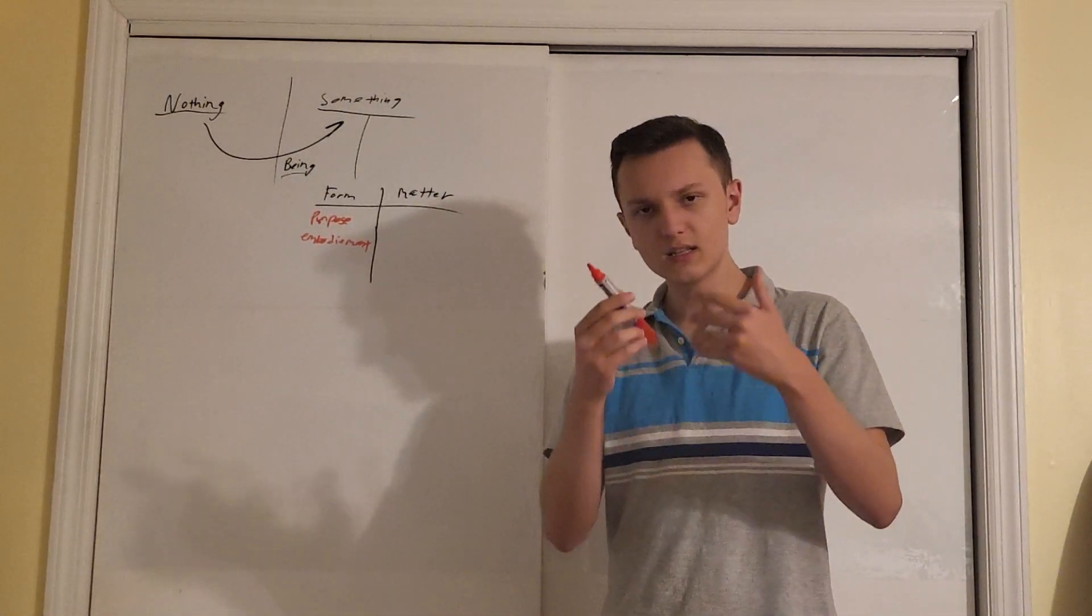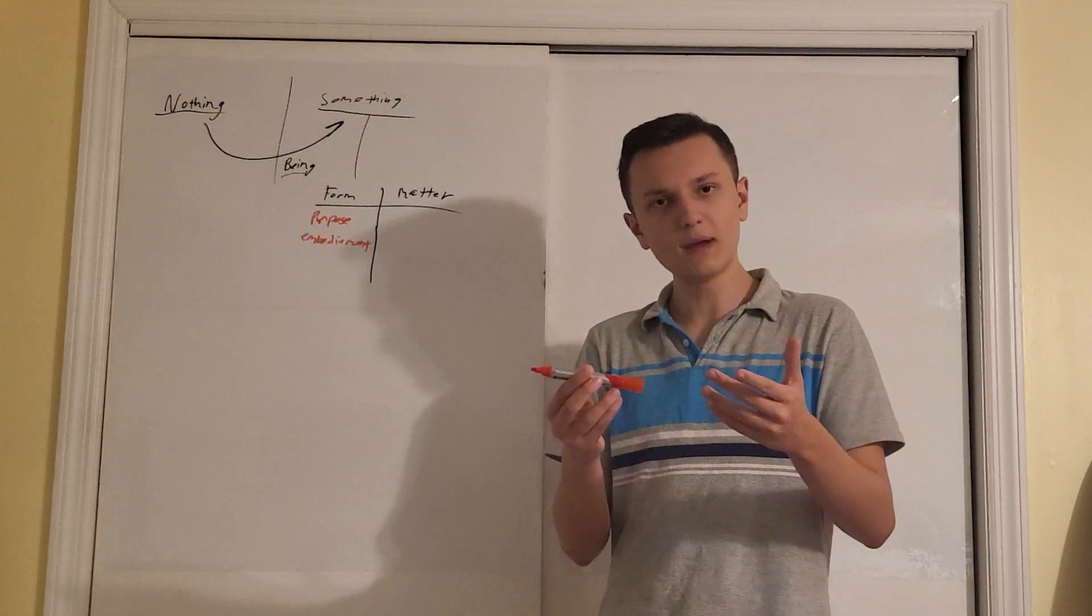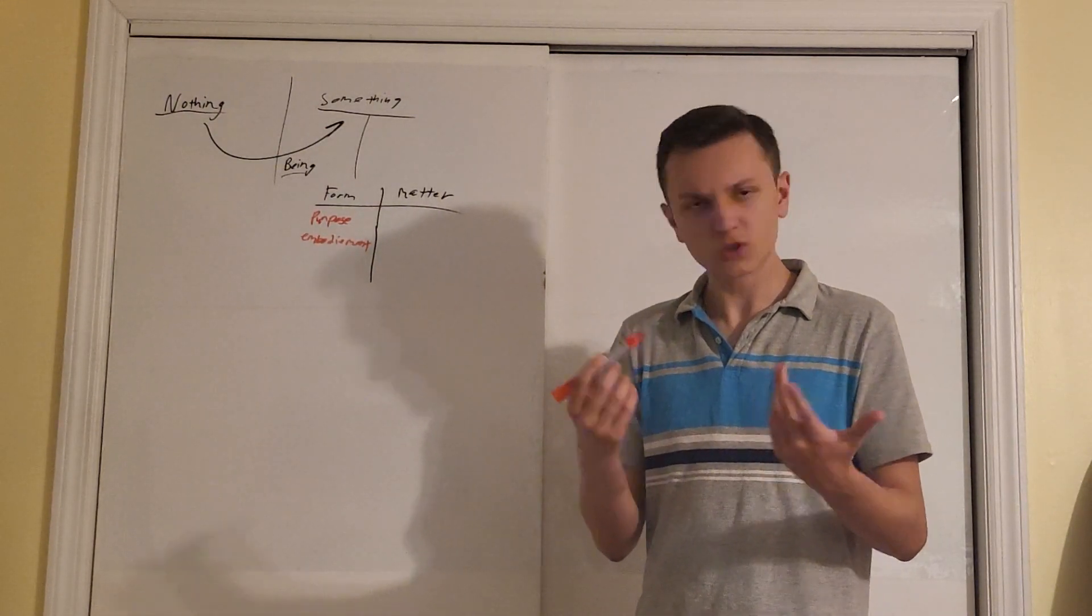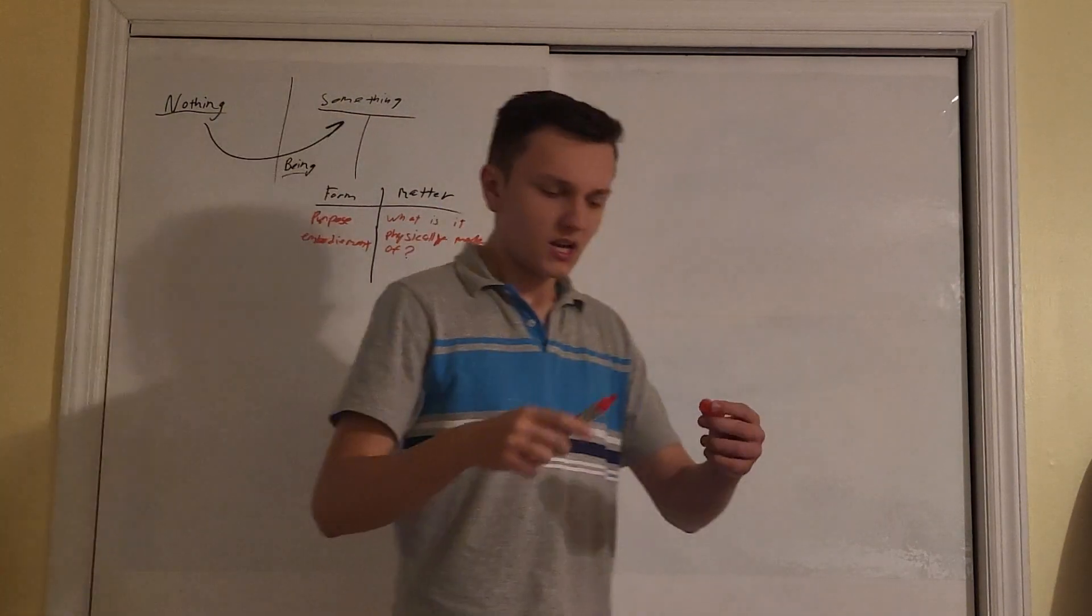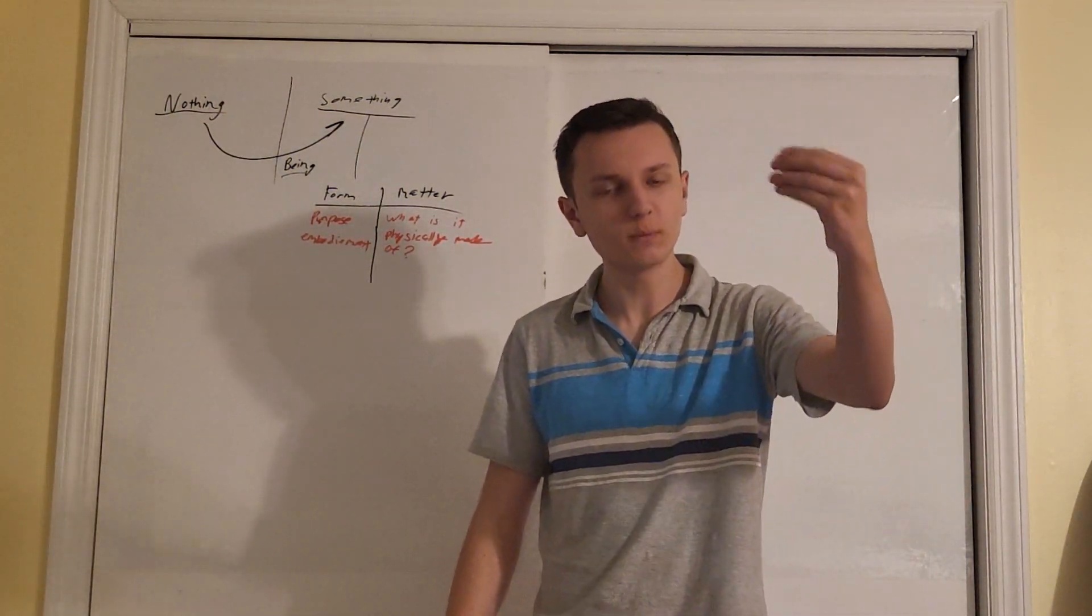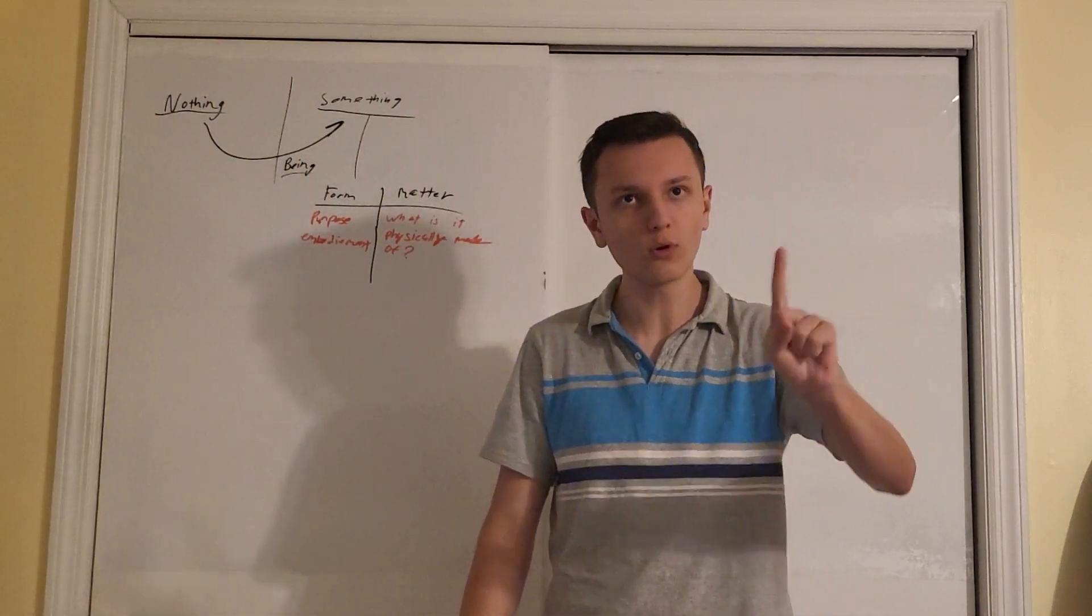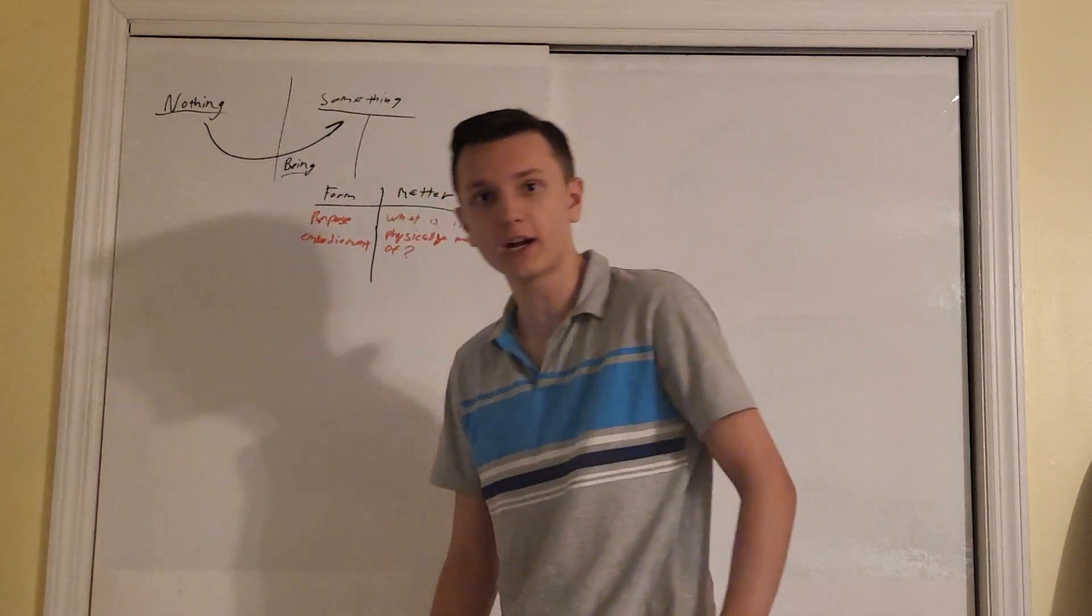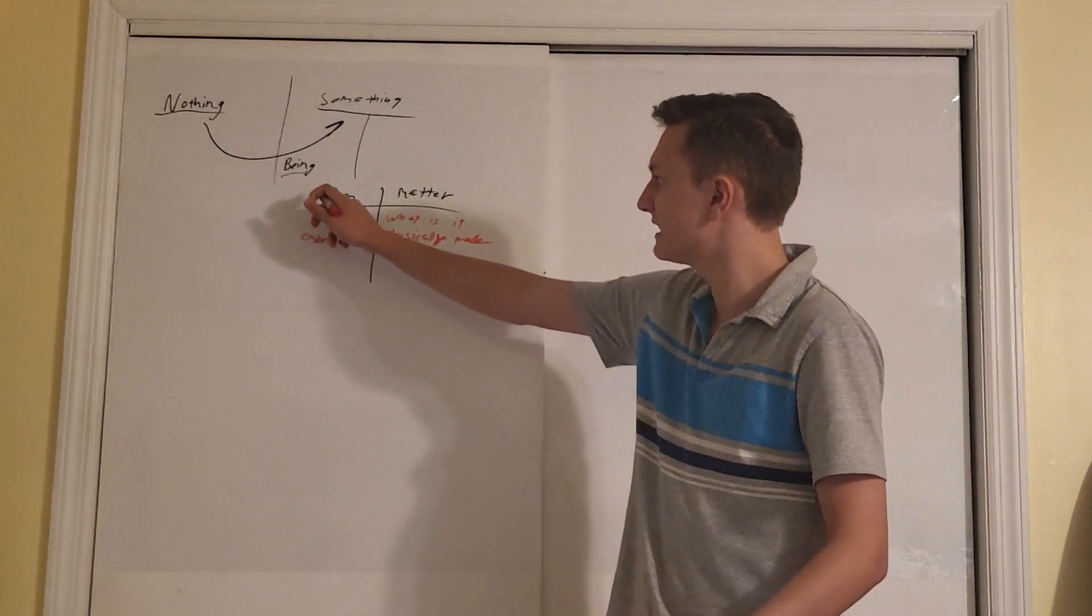So what is matter then? Well, I told you what form is - the marker's ability to behave and effectively be used as a marker. What's it made of? It's made of plastic. It's made of ink. It's made of a little branding. So yeah, that's the gist of what matter is - what is it physically made of? A desk is made of wood. Why is a desk not a chair? Because a desk would be better used as a desk. Yes, you can use it as a chair, but it's more effective as a desk than as a chair.